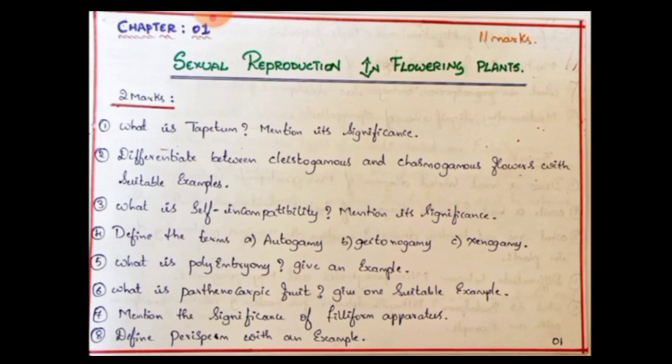You can use these definitions as well as examples. For example, autogamy, geitonogamy, and xenogamy — these three differences can be used to answer the same question as well.